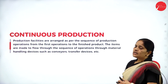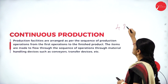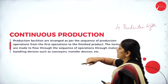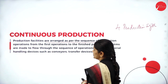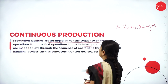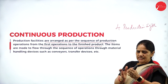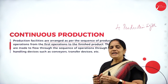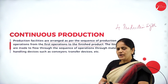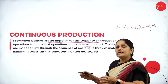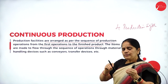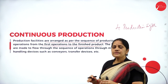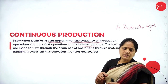The fourth production system is continuous production. In continuous production, the production facilities are arranged as per the sequence of production operations, from the first operation to the finished product. For example, if a product requires three processes, the raw material moves sequentially through process one, process two, and process three, following the same route from start to finish.